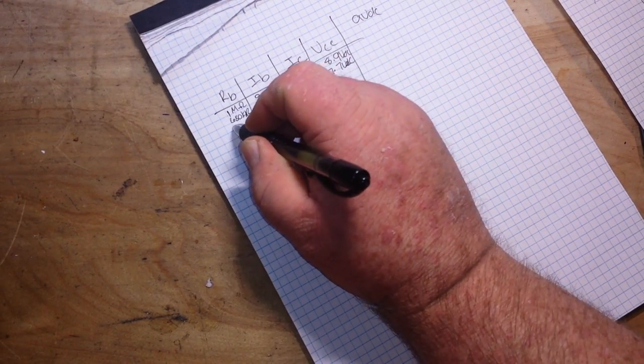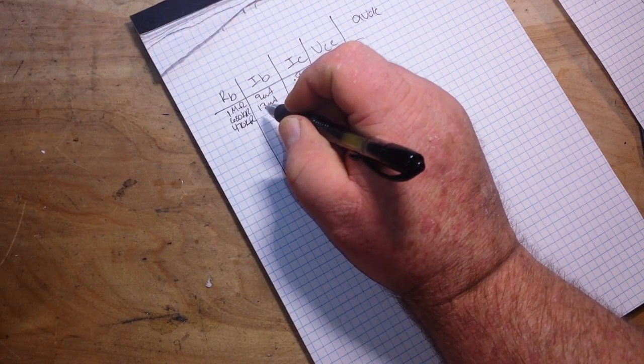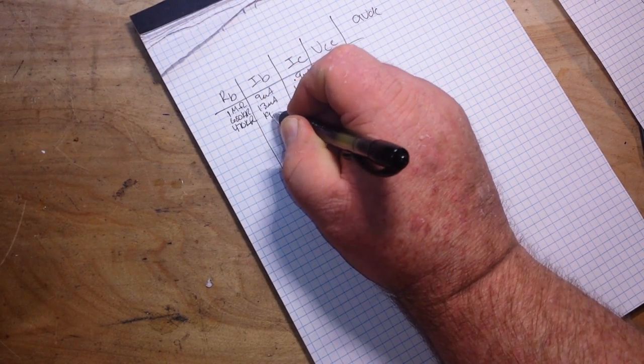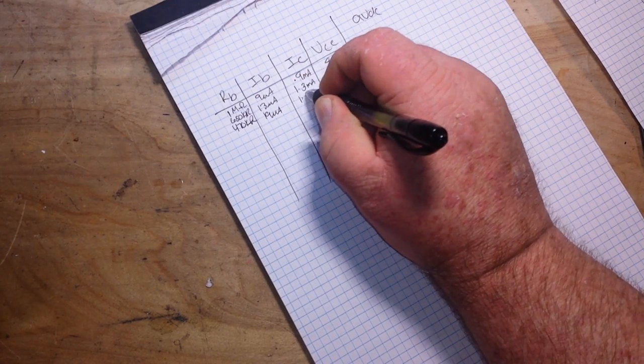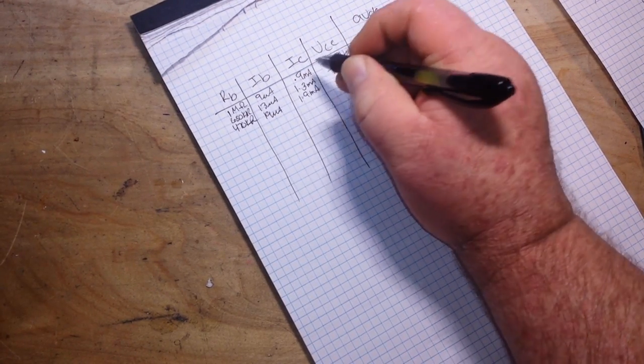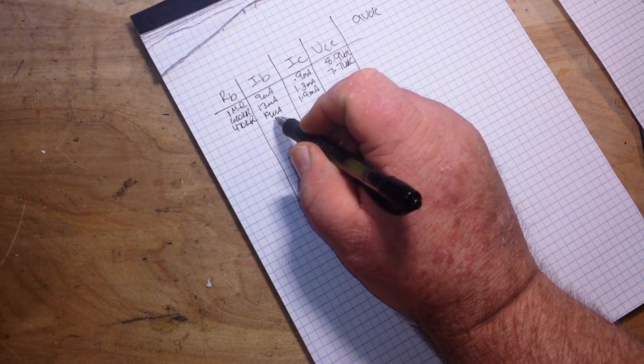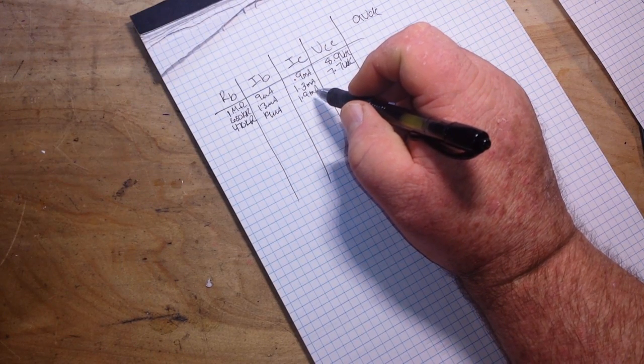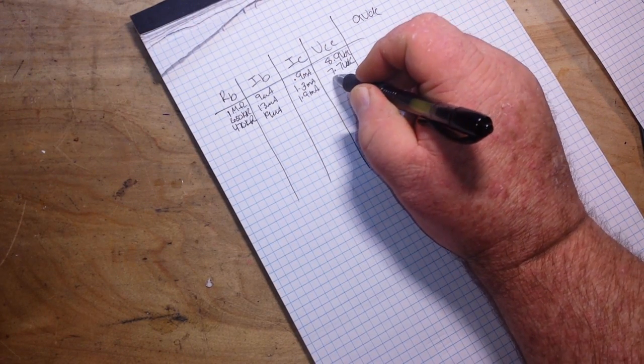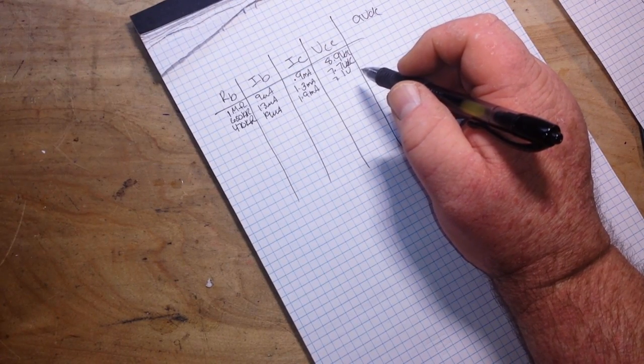Next, I did 470 kiloohms, which gave me about 19 microamps of base current, 1.9 milliamps of collector current, and 7.1 volts of collector emitter voltage.